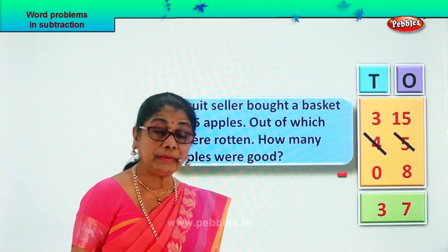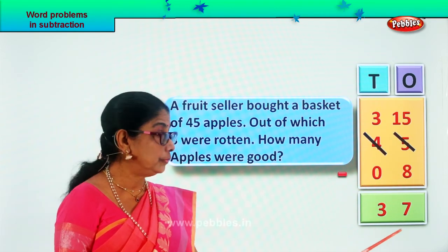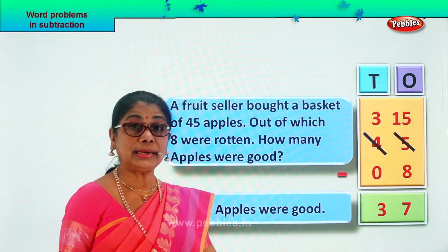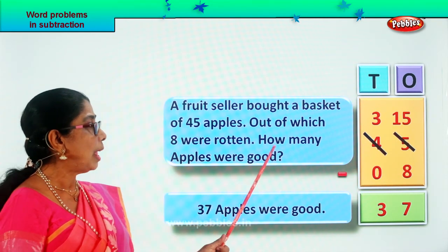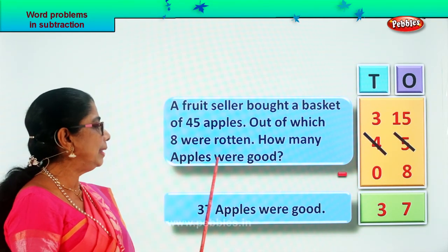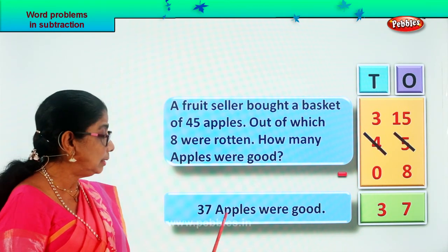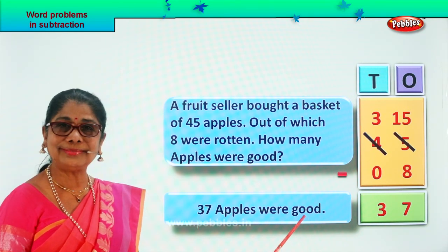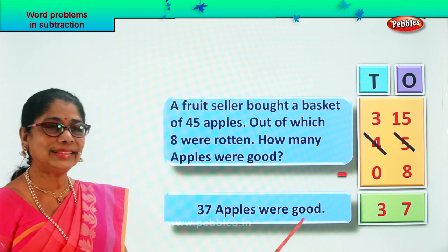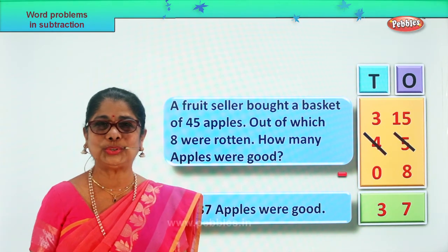So you get an answer of 37. 45 minus 8 gives you 37. What's your question now? How many apples were good? 37 apples were good. That's your answer — 3 tens, 7 ones. Good.